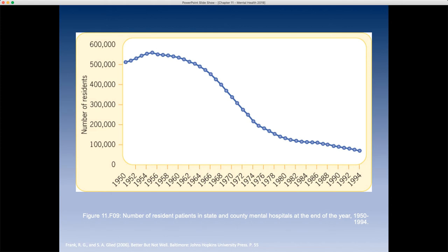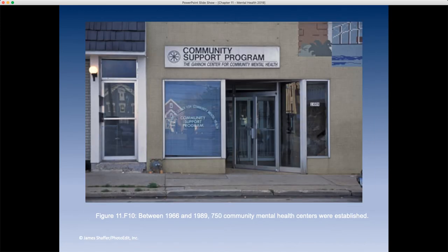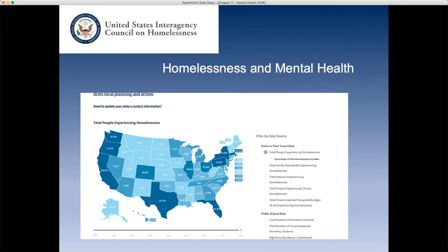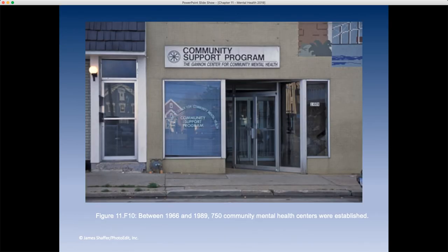Deinstitutionalization happened not only because of the bad reputation of hospitals, but also the idea that a more community-based approach might work better, along with cost concerns. But this had a significant impact on society — what happened to all the people who were in these hospitals? Where did they go? They went out to community support programs. Community mental health just got pushed off to the side.